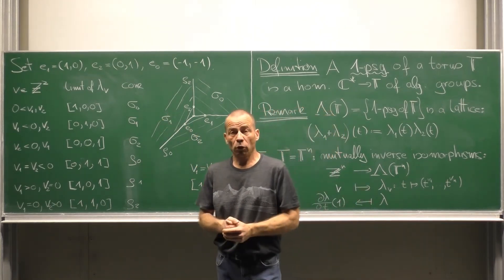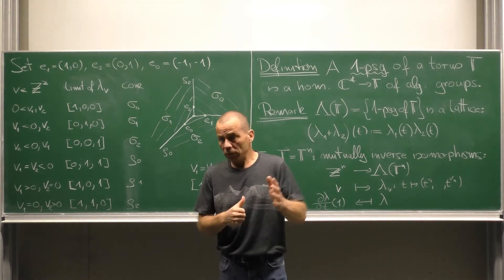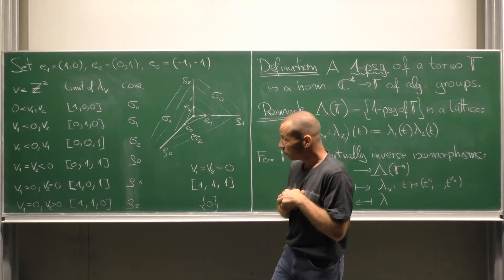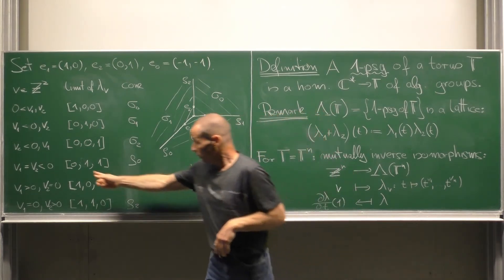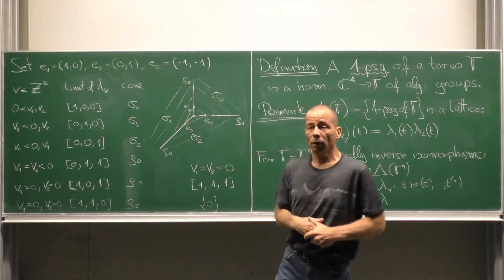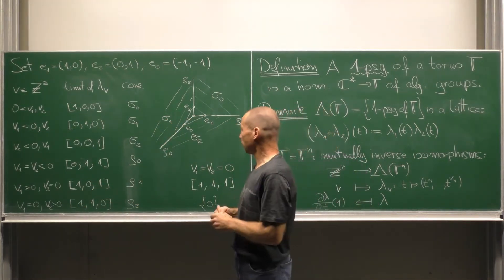And then there are 3 points attracting some, but not so many one parameter subgroups. These are 0,1,1, 1,0,1, and 1,1,0. The associated cones are of dimension 1, it is rho 1, rho 2, and rho 0.